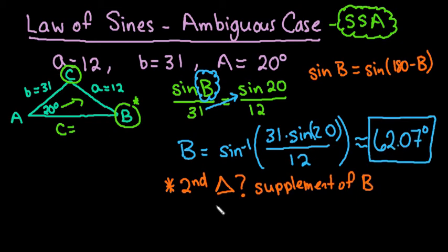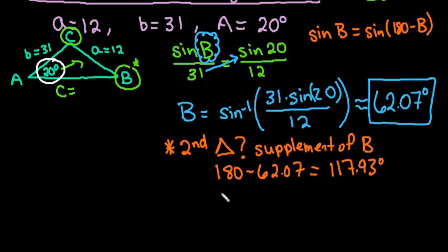So to find the supplement of B, we would do 180 minus 62.07. And we end up with 117.93 degrees. Now what we have to do is take the relationship that we were given. So we were given that A is 20 degrees. So we were given A is 20 degrees plus 117 degrees.